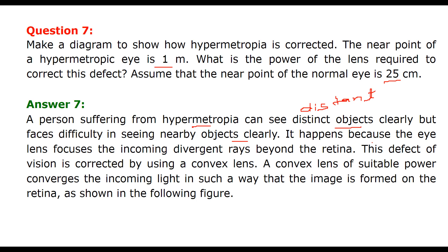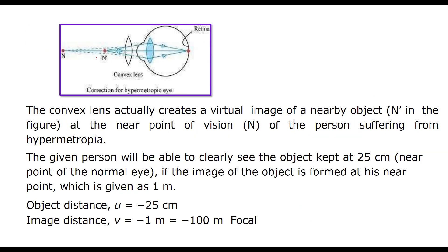The eye lens focuses the incoming divergent ray beyond the retina. The image is not formed on the retina. The defect is corrected by using convex lens. The convex lens of suitable power will converge the light so that the image is formed on the retina. This is the convex lens we are using, this is the eye lens, and now the image is formed here.